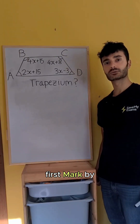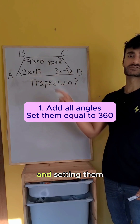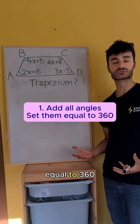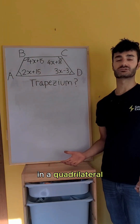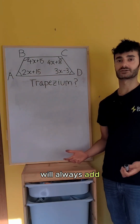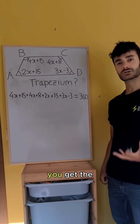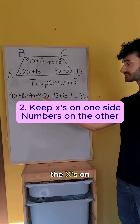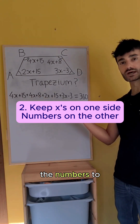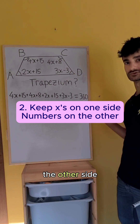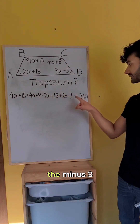You get the first mark by adding up all the angles and setting them equal to 360, because angles in a quadrilateral always add up to 360. You get the next mark for keeping all the x's on one side and moving all the numbers to the other side — the plus 15 becomes a minus 15.